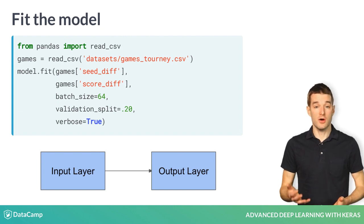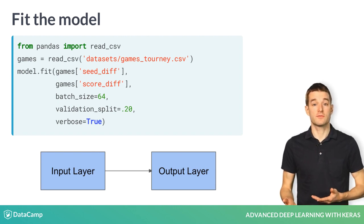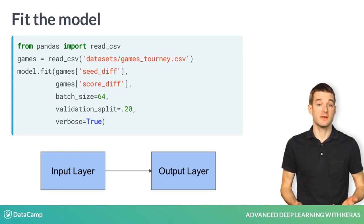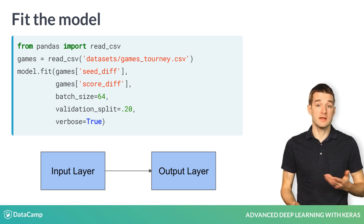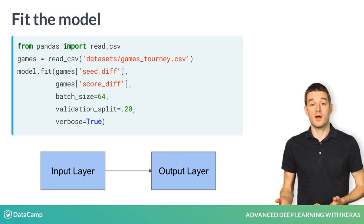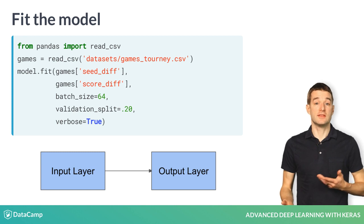To fit the model, load the basketball tournament dataset from a CSV file using pandas and then call model.fit. Use the seed_diff column from the dataset as the input and the score_diff column from the dataset as the output.